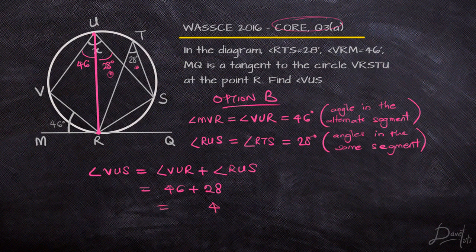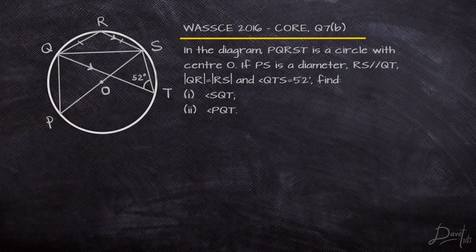Those are two ways to solve the question, but without understanding the principles there's no way to proceed. Now, the core question — question 7b — is in the optional section, and we can expect it to be more challenging. First, let's look at our observations from this particular diagram.